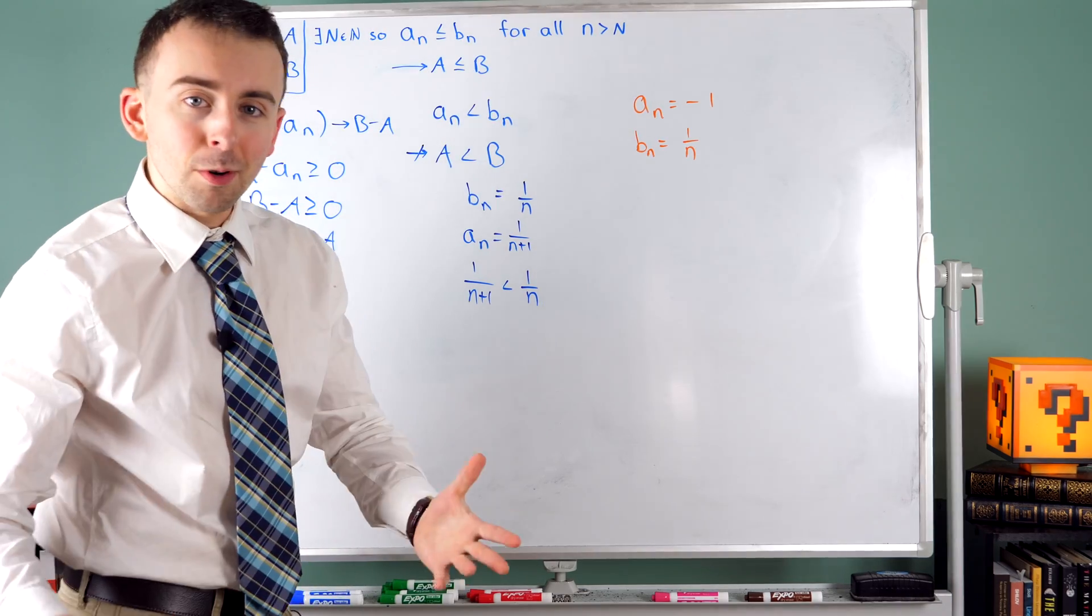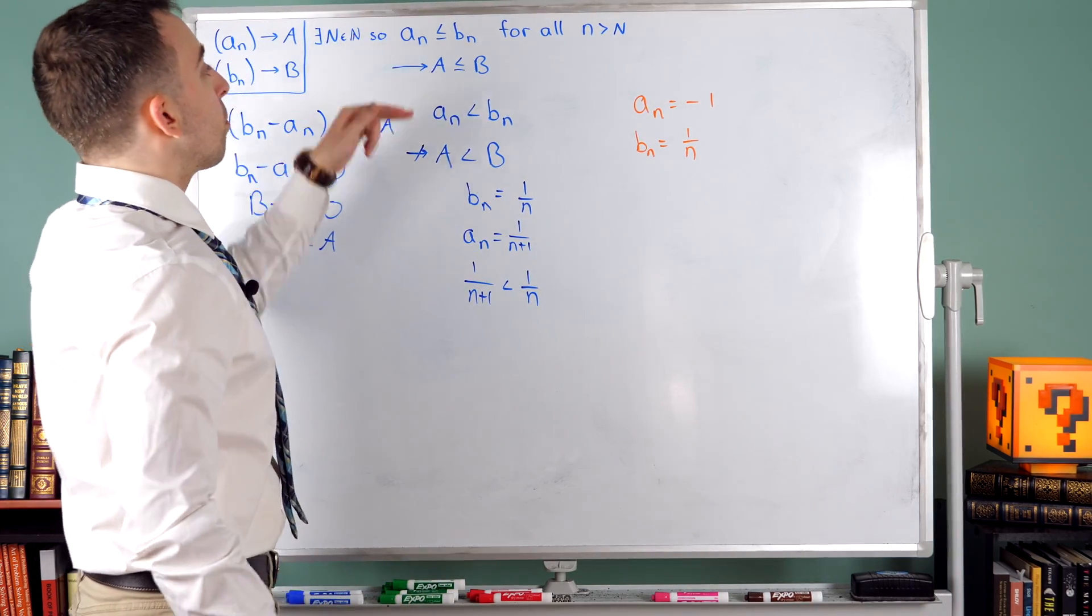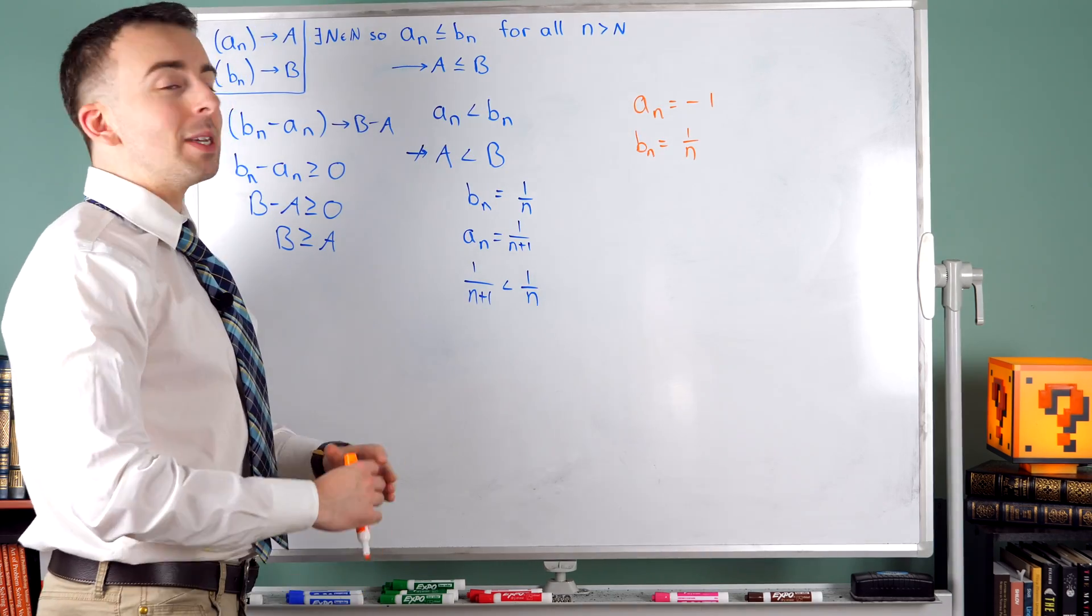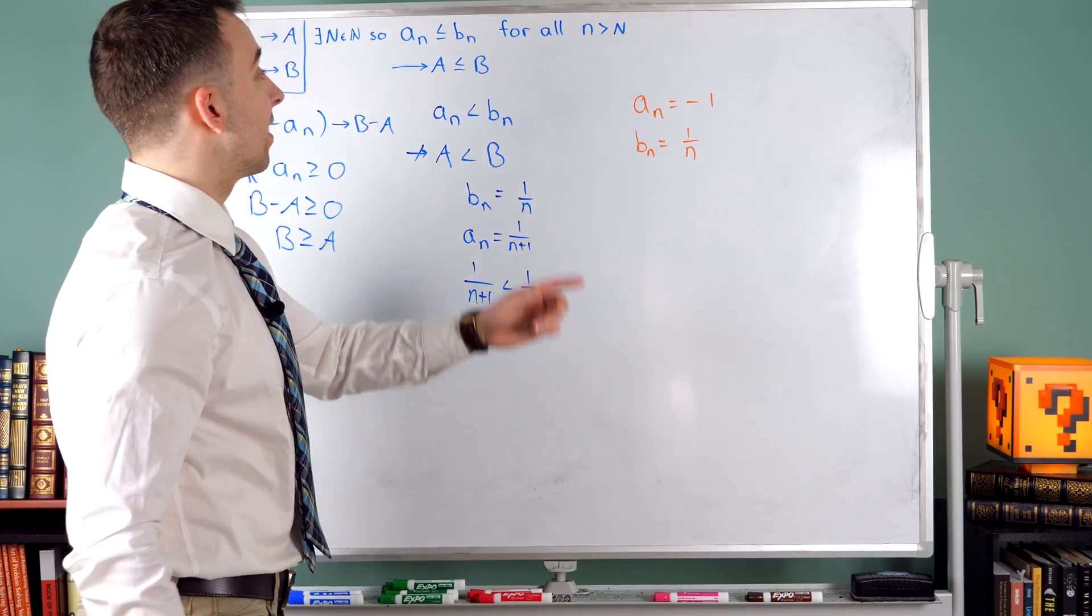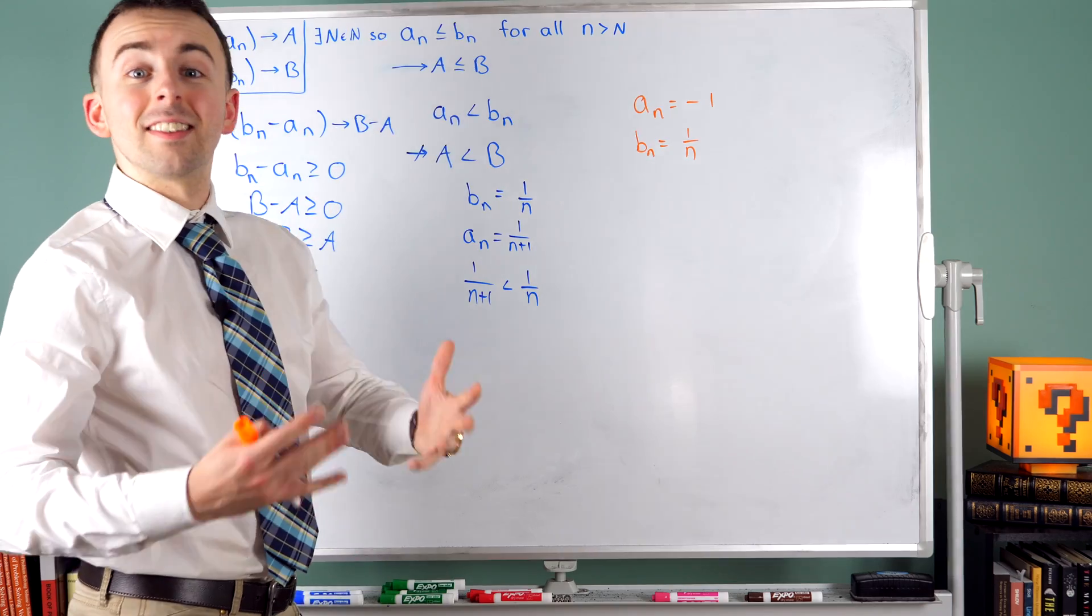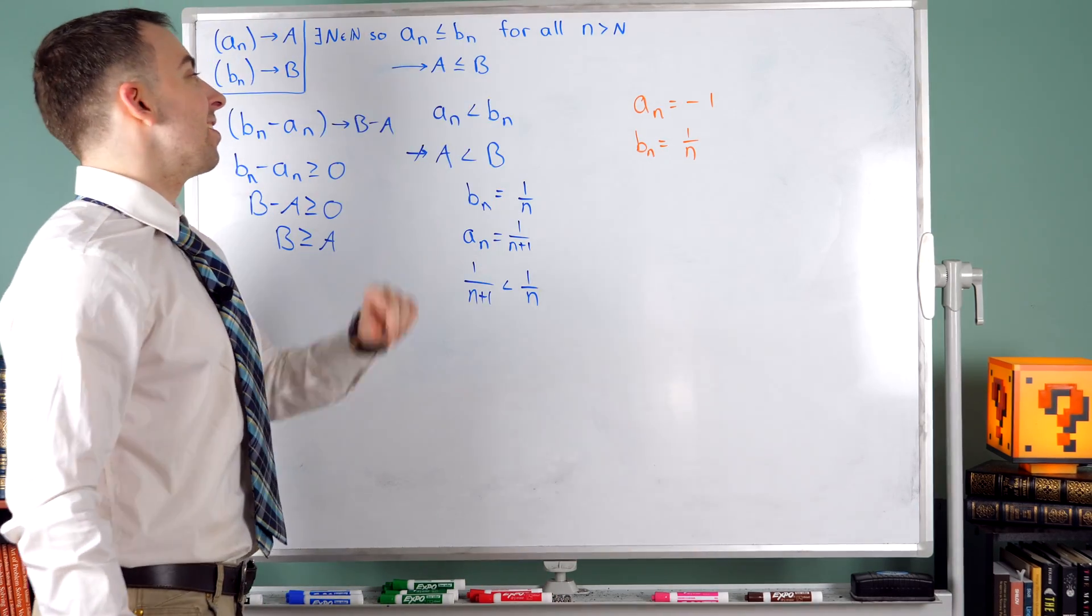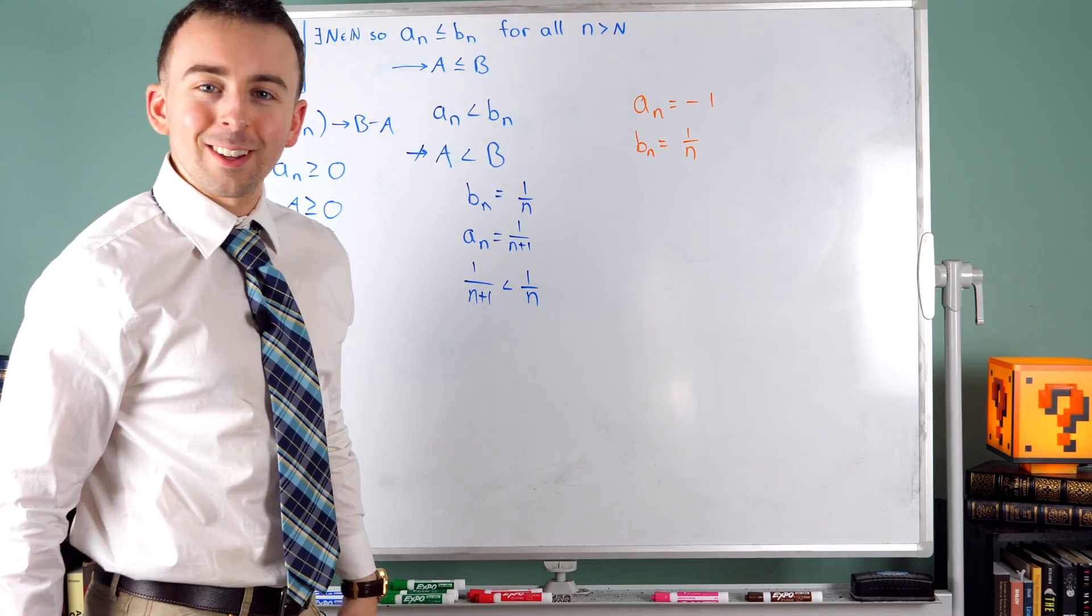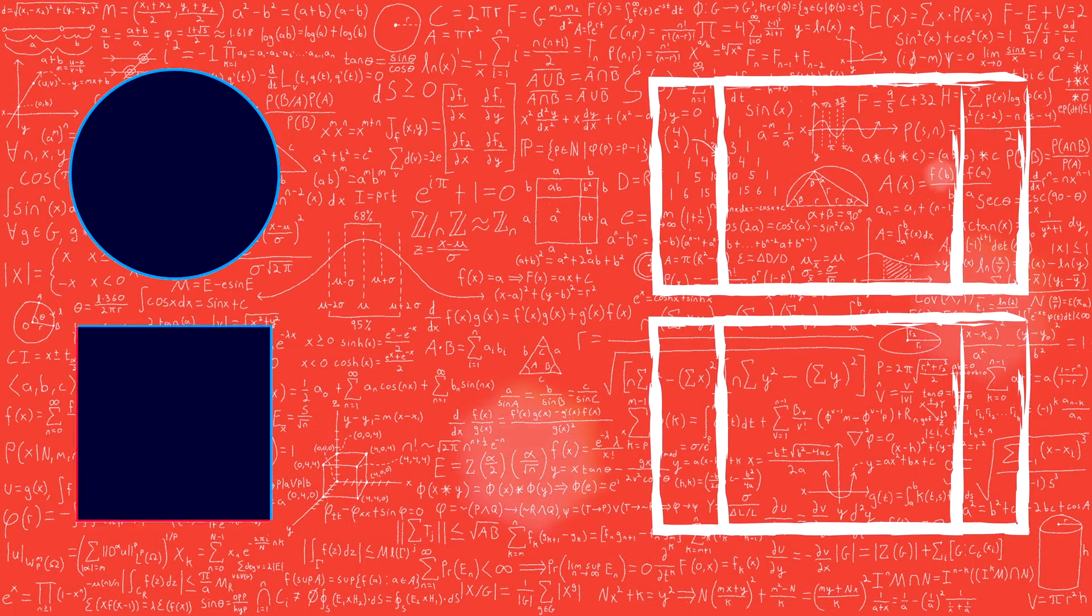So again, limits do not preserve strict inequalities. But that result that we did prove is that limits do preserve order, so to speak. If An is less than or equal to Bn and they're convergent sequences, then their limits have that same order. A is less than or equal to B. So I hope you found that kind of interesting.